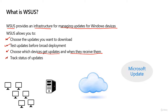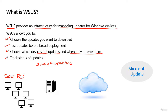Here's why we need WSUS: say you have 500 PCs and some servers. By default, all computers are built to connect directly to Microsoft Update. So all 500 computers would individually connect through the internet to Microsoft and each download the same update. If today's updates are two megabytes, that's two megabytes multiplied by 500 computers — you'd be downloading the same updates across your WAN link 500 times over, with very little control.